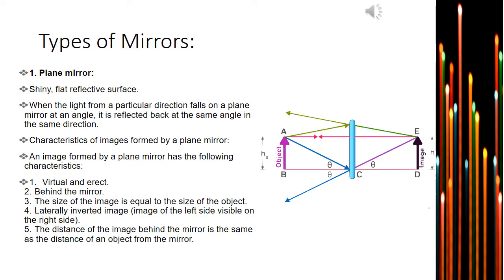Let's talk about types of mirrors. Depending on the surfaces, mirrors are of two types: plain mirror and spherical mirror. A plain mirror is a shiny, flat, reflective surface. When light from a particular direction falls on a plain mirror at an angle, it is reflected back at the same angle in the same direction. So the angle of incidence is equal to the angle of reflection.